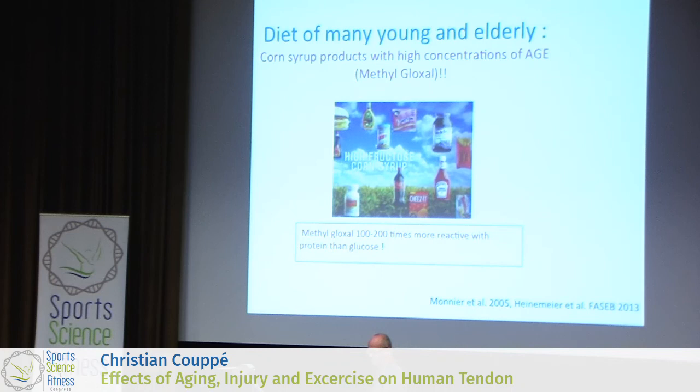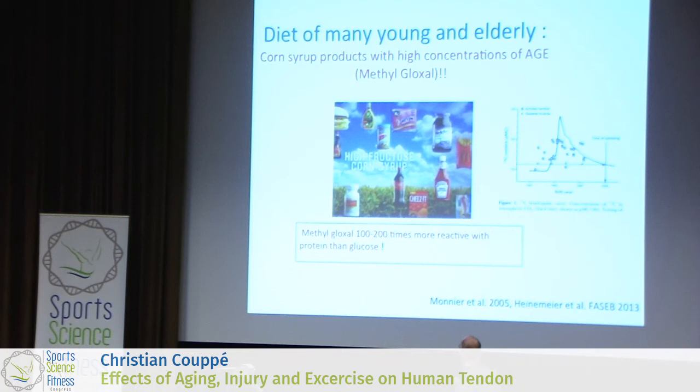Especially with Katja Heinemeyer's data in mind — showing that the tendon is finally formed at the age of 17 to 18 — I think we should particularly consider this when working with young athletes: how much highly processed food and sugar they consume at a young age, as this can have an impact especially at the tendon level.